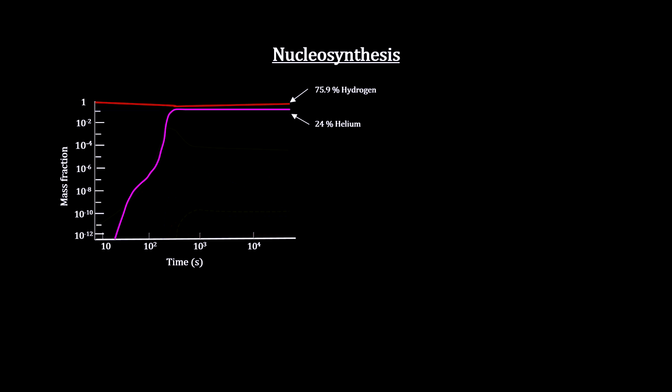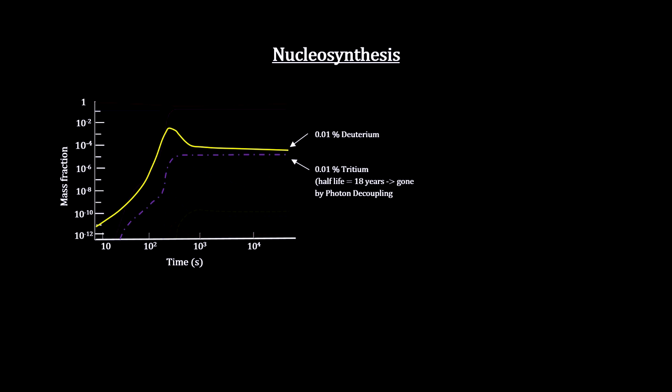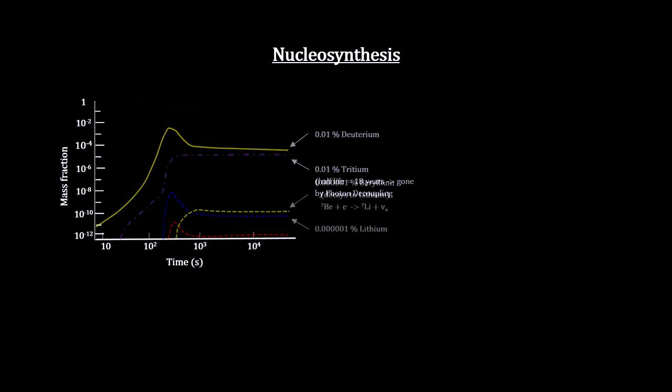The vast majority of the baryonic matter wound up in the form of hydrogen and helium nuclei. The percentages of deuterium and tritium were much smaller. There were just traces of beryllium and lithium, and the remaining free neutrons decayed over time into protons.